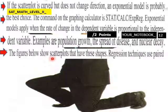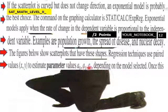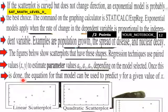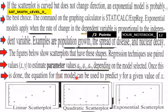The figures below show scatter plots that have these shapes. Regression techniques use paired values x, y to estimate the parameter values a0, a1, and a2 depending on the model selected. Once this is done, the equation of that model can be used to predict y for a given value of x. So here is our linear, basically a linear scatter plot. This would be a quadratic scatter plot. Then this would be an exponential scatter plot here.